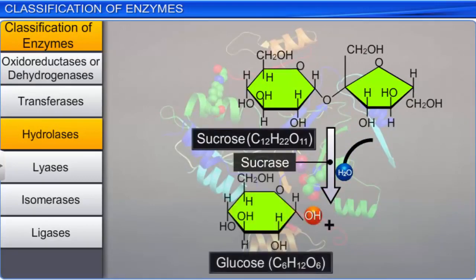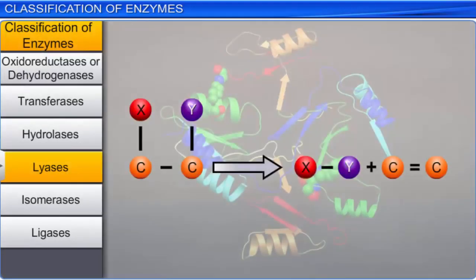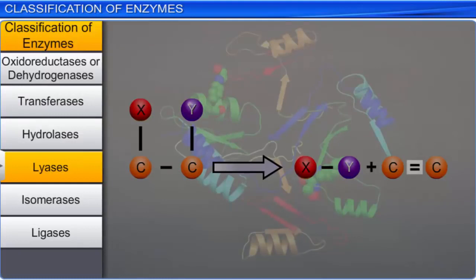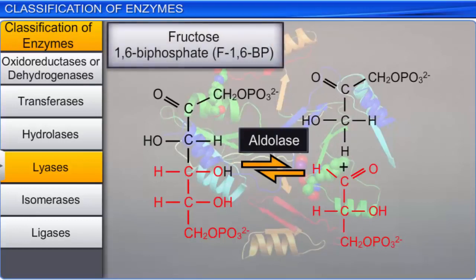Lyases comprise the fourth class of enzymes that catalyze the removal of bonds by mechanisms other than hydrolysis and oxidation. Lyases use mechanisms such as forming double bonds or a new ring structure for catalysis. An example is aldolases, which cleaves the aldol groups in fructose 1,6-biphosphate and forms dihydroxyacetone phosphate and glyceraldehyde-3 phosphate.